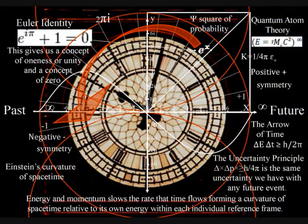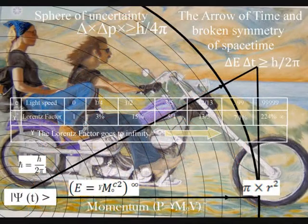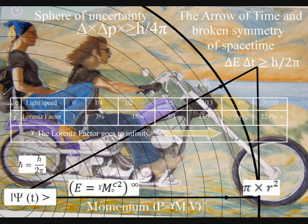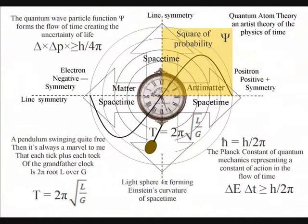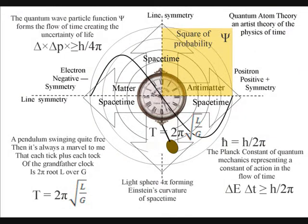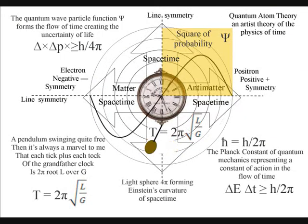In this theory, the uncertainty of quantum mechanics is the same uncertainty we have with any future event, because time is unfolding photon by photon with the flow of electromagnetic fields forming the electrical potential of our own future.